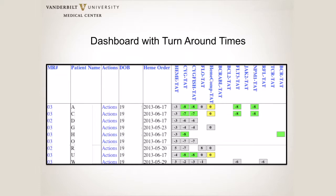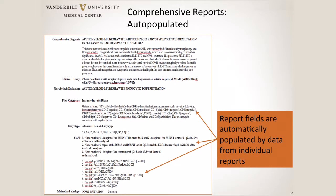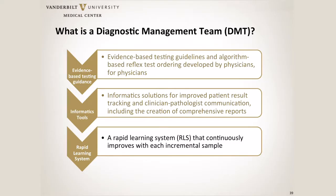On the flip side, our lab managers can use this to track turnaround times for testing as well. We then use these dashboards to auto-populate a comprehensive report. Once we see everything go green across the color indicators, we go into Quill and open up the report — everything from clinical history on down is already there — and we just add our canned comprehensive diagnosis and our interpretation. The last critical leg of the DMT is that it has to be a rapid learning process, which I'll come back to after we talk about impact and outcomes.